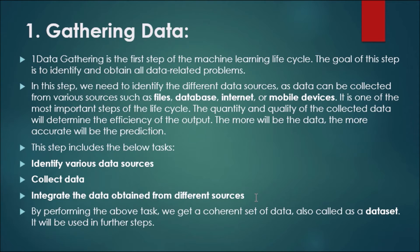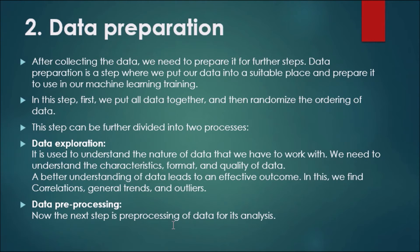After collecting data from different resources, we integrate it. By performing the above tasks, we get a current set of data, also called a dataset. This dataset, gathered in the first step, will be used in further steps of the machine learning life cycle.